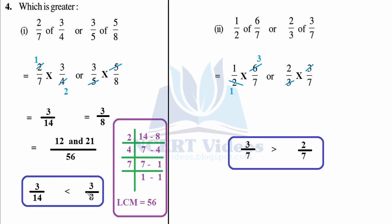Since denominator is same, 21 is greater than 12, meaning 3/5 of 5/8 is greater than 2/7 of 3/4. Similarly for the second part: 1/2 of 6/7 and 2/3 of 3/7. Cancellation: 1 into 2, 3 into 6 gives 3/7.